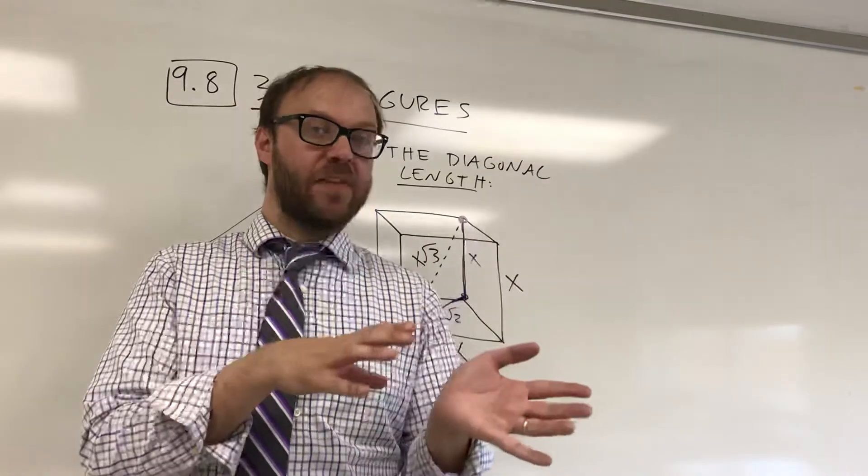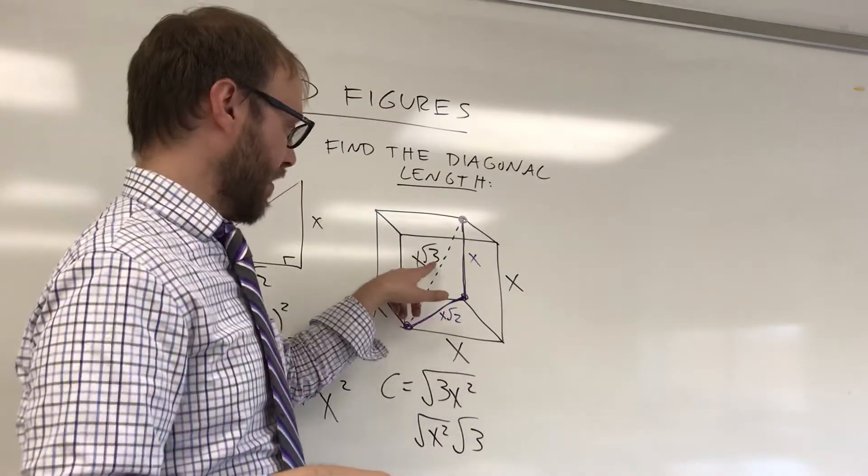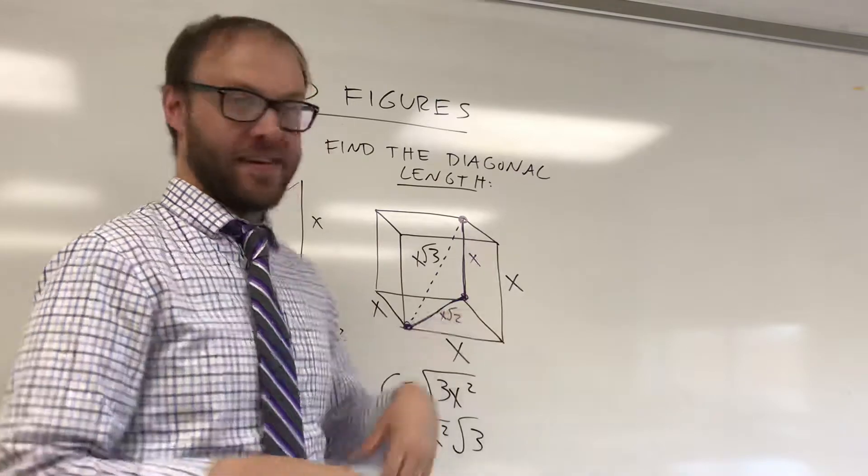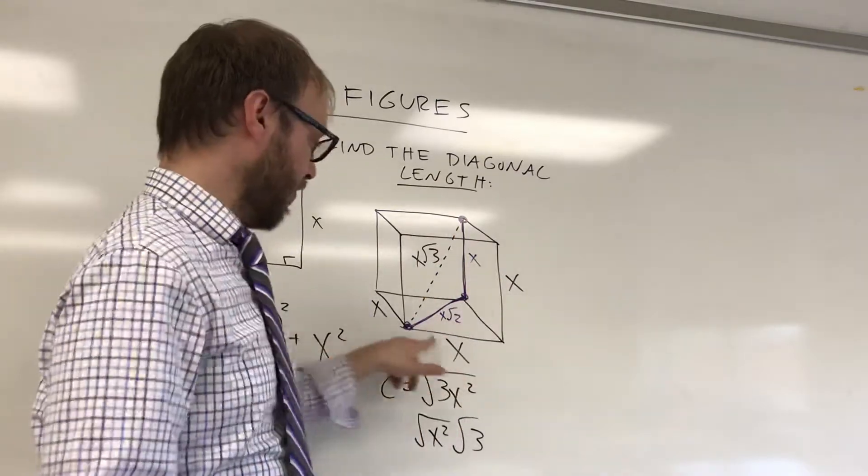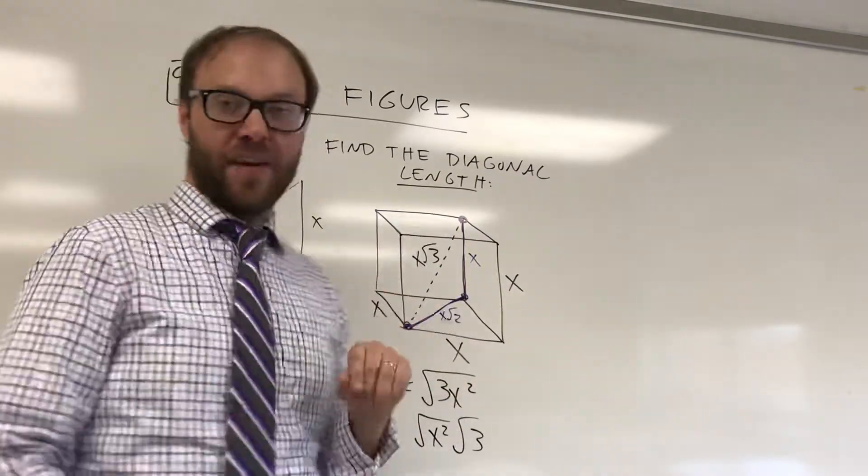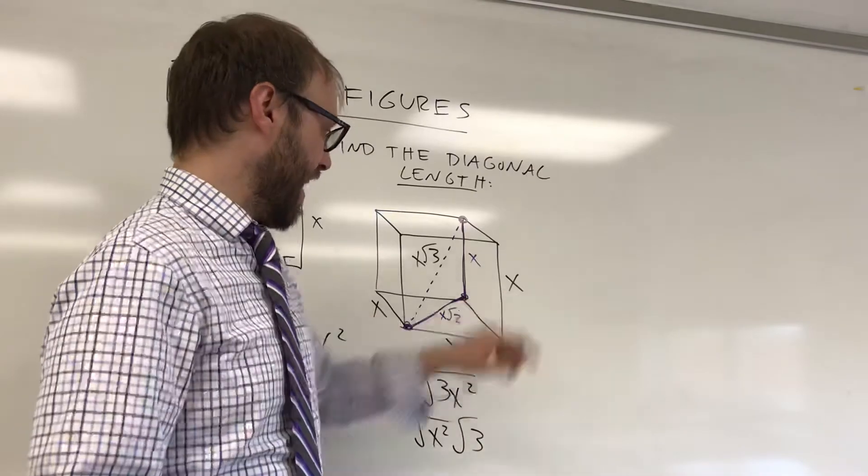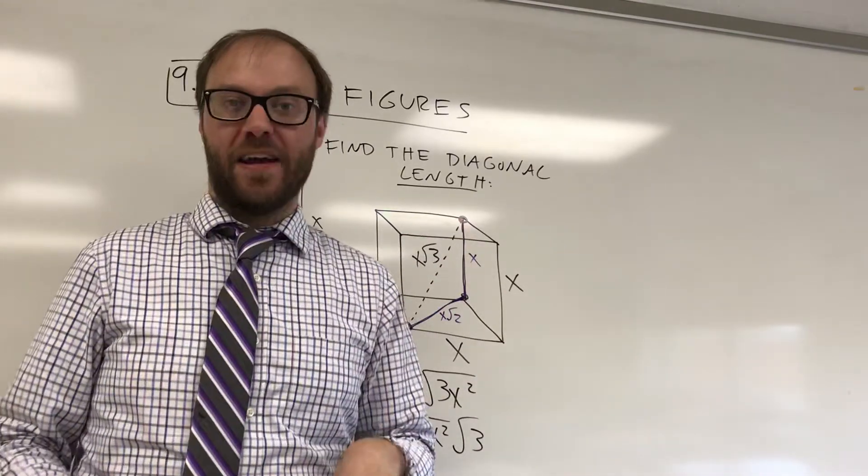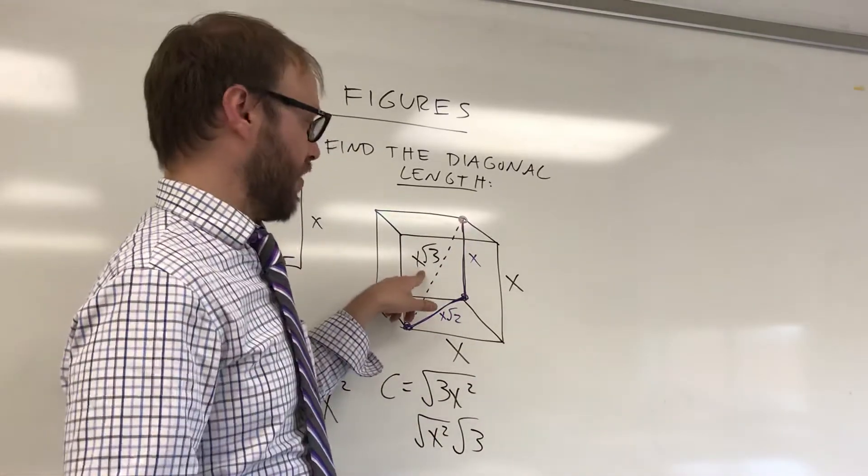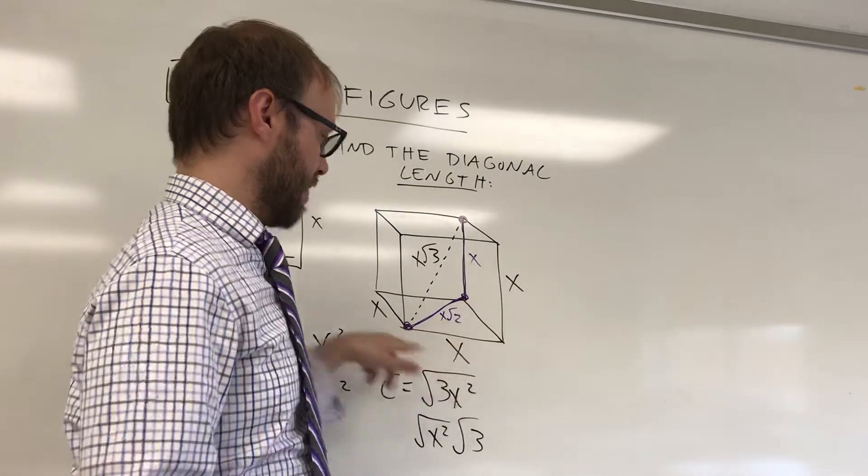Or, if they give you the length of the diagonal, you can divide by the square root of 3, and you can get the side lengths. So, if I had side lengths of 4, 4, and 4, this would be a 4 radical 3. 5, 5, and 5, diagonal would be a 5 radical 3. If I told you this was an 8 radical 3, you would know that it was an 8 by 8 by 8 shape.